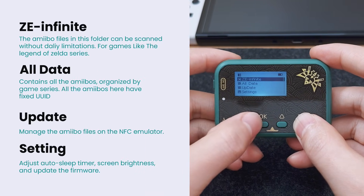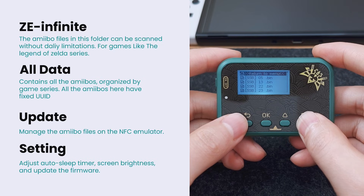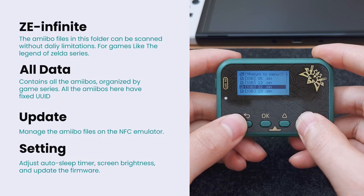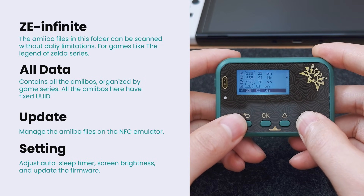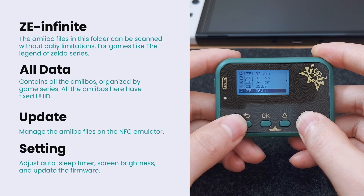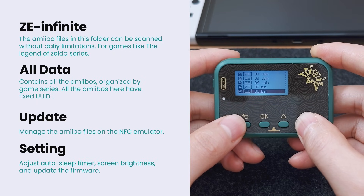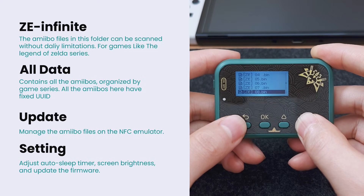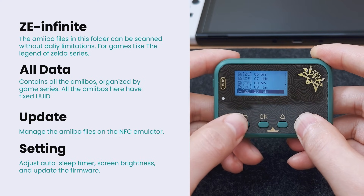ZE Infinite: the amiibo files in this folder can be scanned without limitations, as it generates a different UUID every time. The amiibo files in this folder are for the Zelda series, making this feature particularly useful for that series.